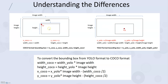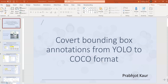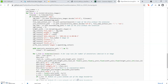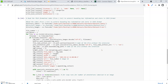Now that we understand the differences between the two formats, it is quite easy to translate from one to the other using simple math equations. If we are given a YOLO format bounding box, we can easily convert it to COCO format using these transformations. I created a Python file that does this, which I will make available on my GitHub repository — link below. Let me give a small explanation of how I did it in my Jupyter notebook.